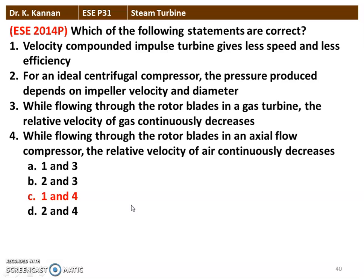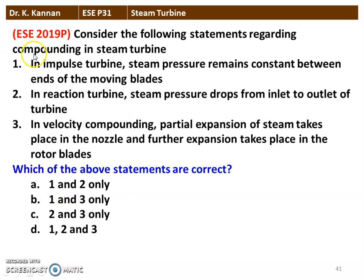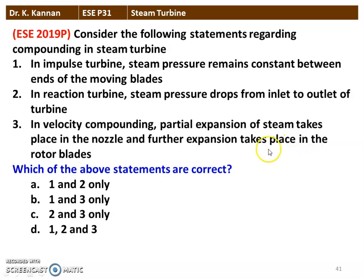The next question from the 2019 question paper — consider the following statements regarding compounding in the steam turbine. In the impulse turbine, steam pressure remains constant between the ends of the moving blade — that statement is correct; across the rotor there is no change in pressure for the impulse turbine. In the reaction turbine, steam pressure drops from inlet to outlet — also correct. Statement 3: velocity compounded — partial expansion takes place in the nozzle and further expansion takes place in the rotor blade — statement 3 is not correct. Velocity compounded turbine is an impulse turbine where pressure drop takes place only in the nozzle. So statements 1 and 2 are correct — option A.